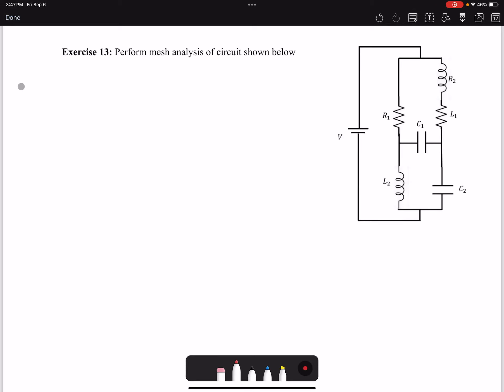Hello everyone, in this video we are going to solve Exercise 13. We're going to perform mesh analysis for this circuit. Mesh analysis is another name for KVL, Kirchhoff's Voltage Law, that through any loop the voltage drop would be zero.